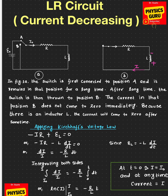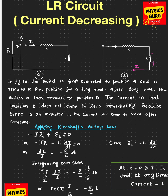Here is the schematic diagram. We have a switch that can be placed either in position A or in position B. When it is connected to position A, the battery is in the circuit. We keep the switch in position A for a long period of time — meaning the current in this circuit will be a steady, constant current passing through it, because the current in an inductor takes a certain time to reach its maximum value. We must allow that time, leaving the switch in position A so there is a steady current in the circuit.